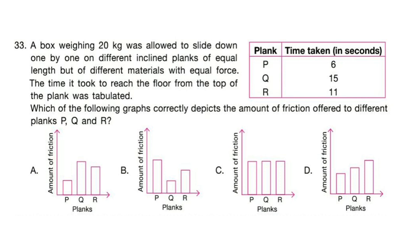Question 33: A box weighing 20 kg was allowed to slide down different inclined planks of equal length but different materials with equal force. The time it took to reach the floor was tabulated. Which graph correctly depicts the amount of friction offered by different planks P, Q and R? Correct answer is option A.